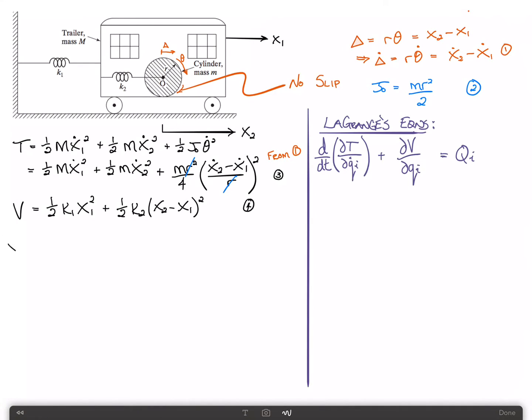So the first equation of motion can be found by taking the derivative with respect to generalized coordinate x1. When we take the time derivative of T with respect to x1, we end up with M x1 double dot. And then there's a contribution from this term here, and that is minus m over 2 times x2 minus x1 double dot, plus from the potential energy, k1 x1 minus k2 times x2 minus x1, and that will be equal to zero.